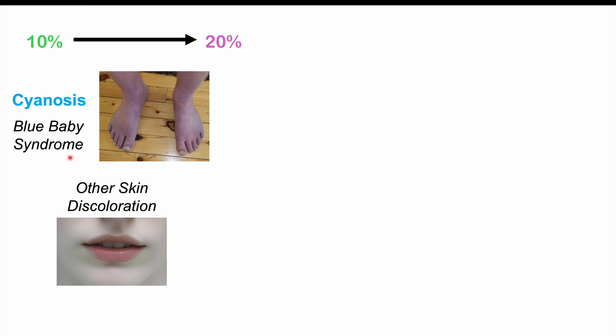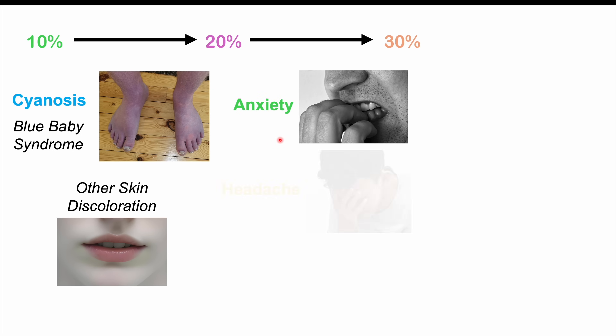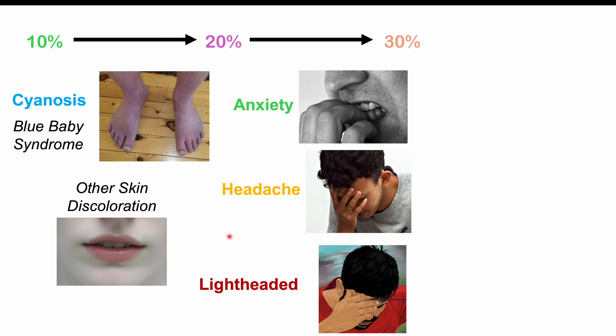Other skin discoloration findings include gray skin and very pale skin. If we check the blood, it starts to get darker in coloration — what is described as chocolate brown. Once we get past 20%, from 20% to 30% methemoglobin, we start to see other signs and symptoms: anxiety, headaches, and lightheadedness.